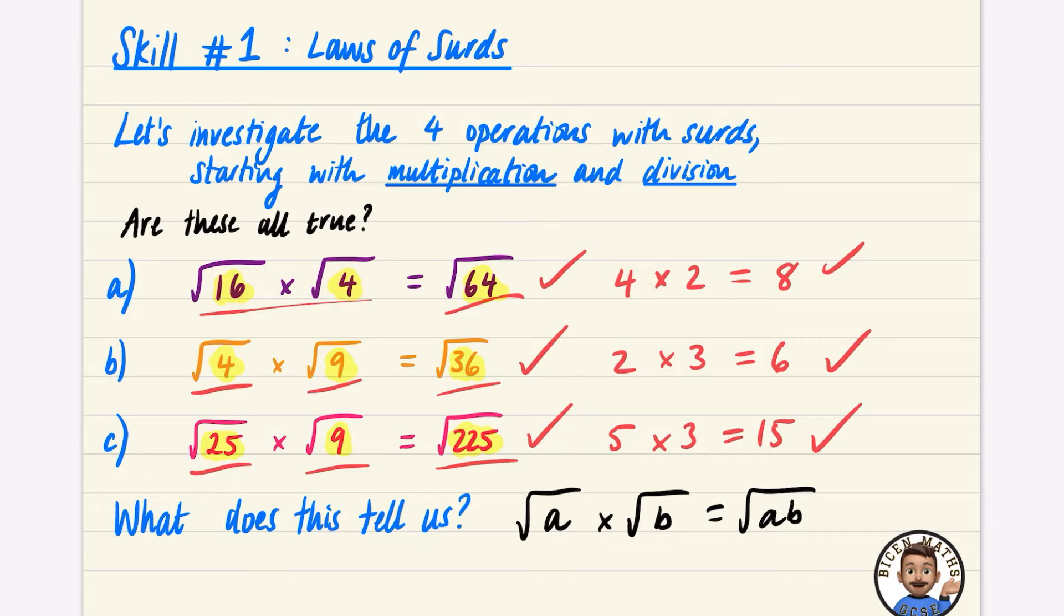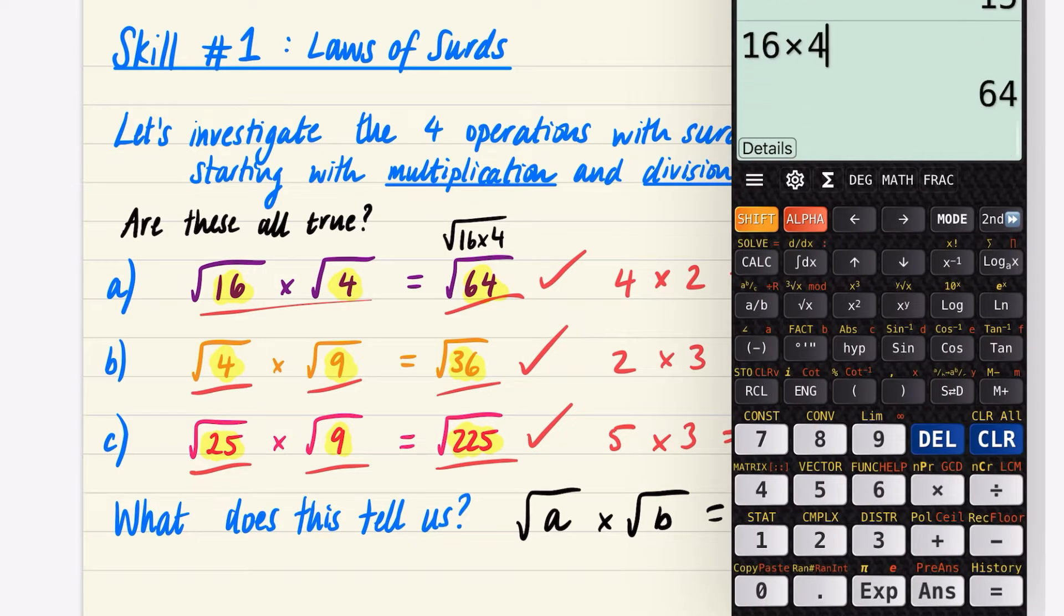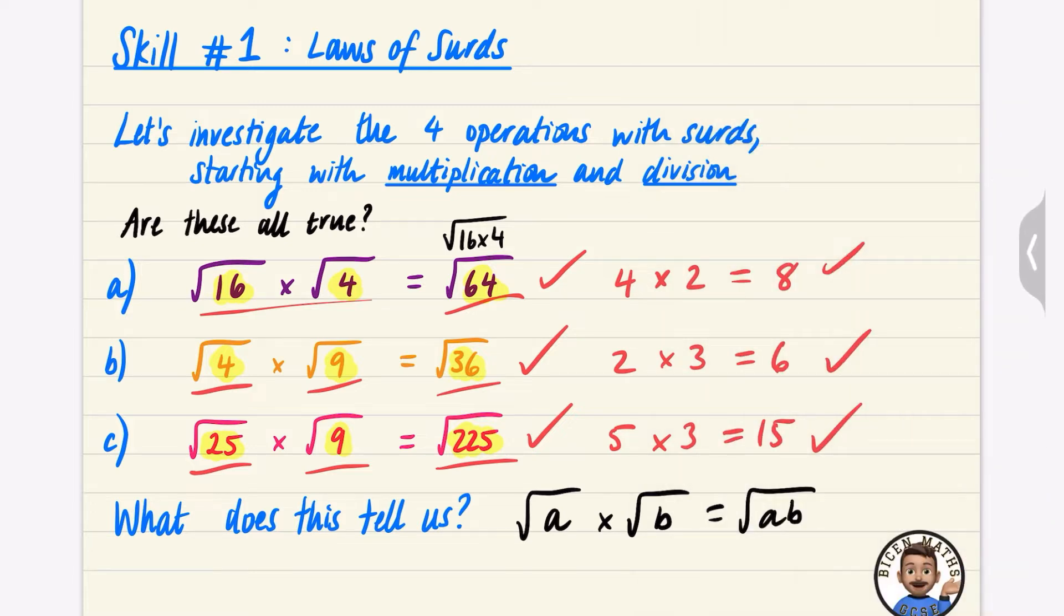The square root of 16 times the square root of 4 is the same as the square root of 64, which is the square root of 16 times 4. 16 times 4 is 64. So this is our first law that we have.